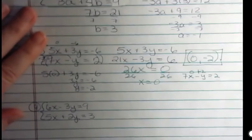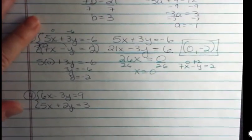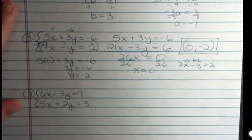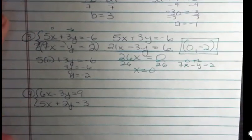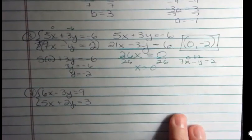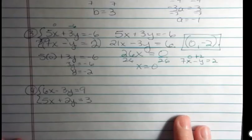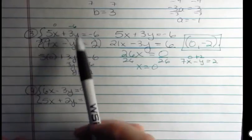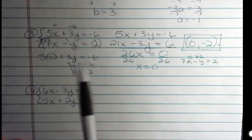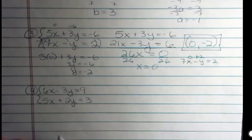And one last thing here. This is the hardest kind of system to solve. So of course you'll have one of these on your final. That's how it goes. What we want to do here is we want something to be opposite. But it's not a quick fix like it was up here, where we just had to multiply one equation. We're going to have to multiply both equations.